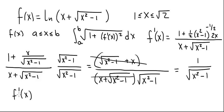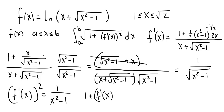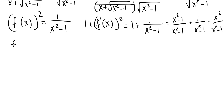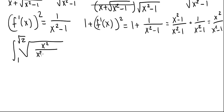The next step is to square the derivative. f prime of x squared is just 1 divided by x squared minus 1. Now let's write 1 plus f prime of x squared and simplify: this is 1 plus 1 divided by x squared minus 1, which equals x squared minus 1 divided by x squared minus 1 plus 1 divided by x squared minus 1, and that equals x squared divided by x squared minus 1. Now we are ready to integrate to find the arc length.